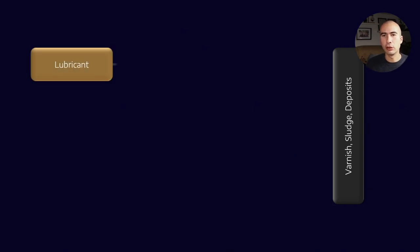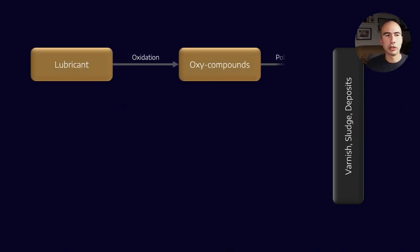In the previous lesson, we talked about how varnish, sludge, and deposits can form in three different ways. The first is that lubricant oxidizes, creating oxy compounds which polymerize into varnish and sludge.